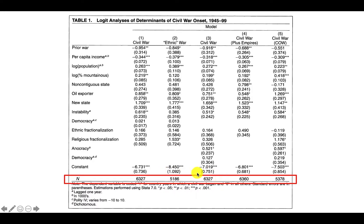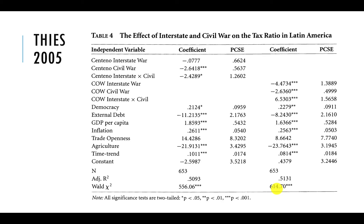To conclude, I'm going to walk through table four from the 2005 article that we're reading this week. We'll start by reading the title of the table: 'The Effect of Interstate and Civil War on the Tax Ratio in Latin America.' This is a great title because it gives you the scope — Latin America — the dependent variable — tax ratio — and the independent variables they're most interested in — interstate and civil wars. The independent variables are listed in the first column, and you can see interstate war and civil war repeated several times and presented as different models.